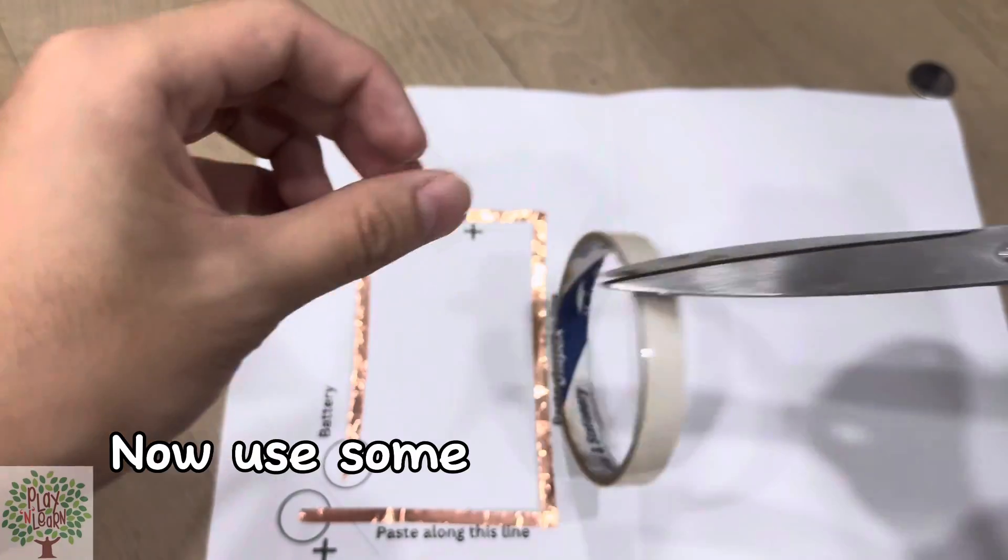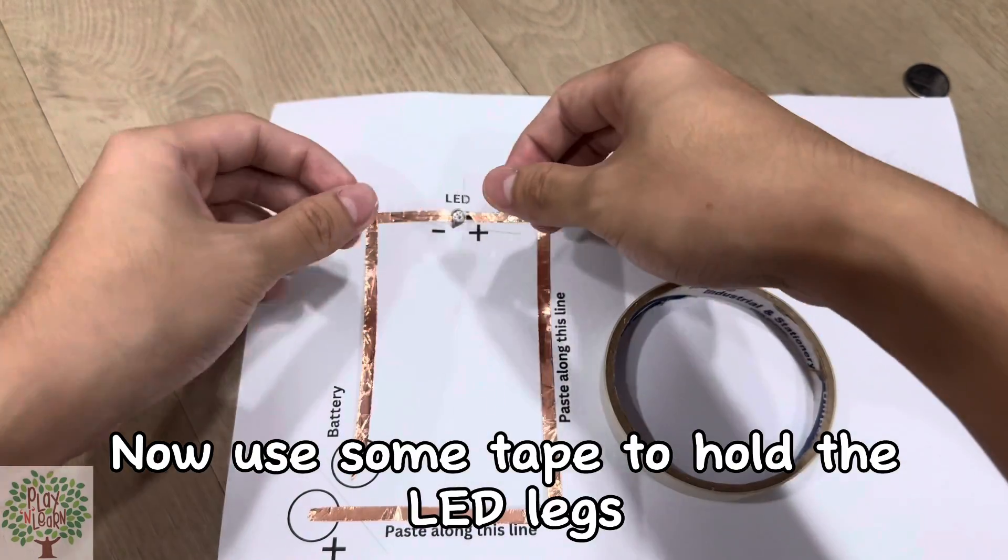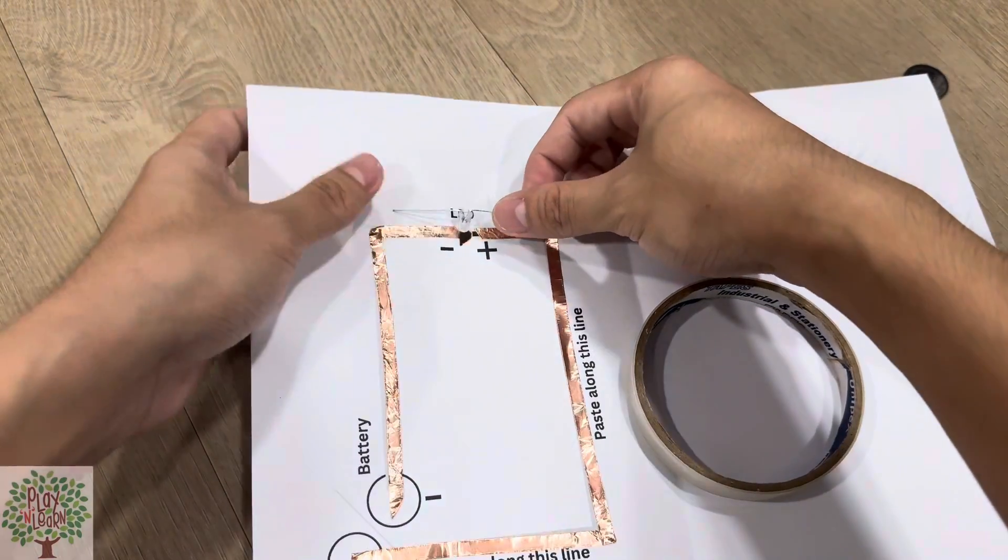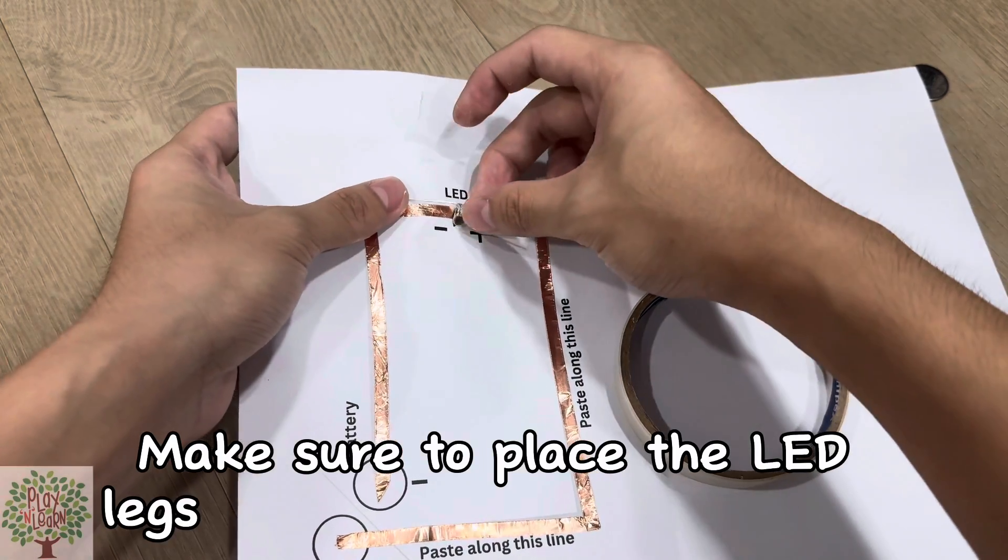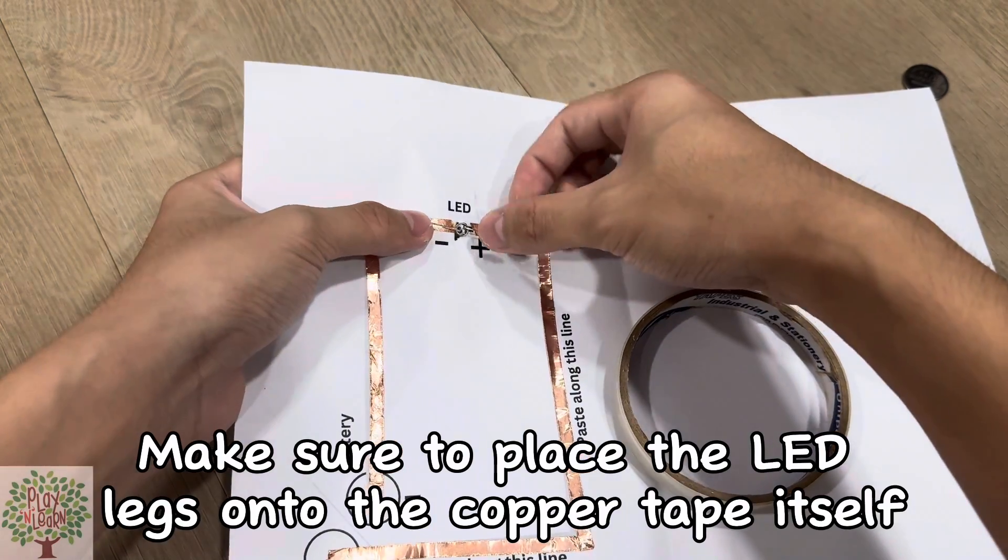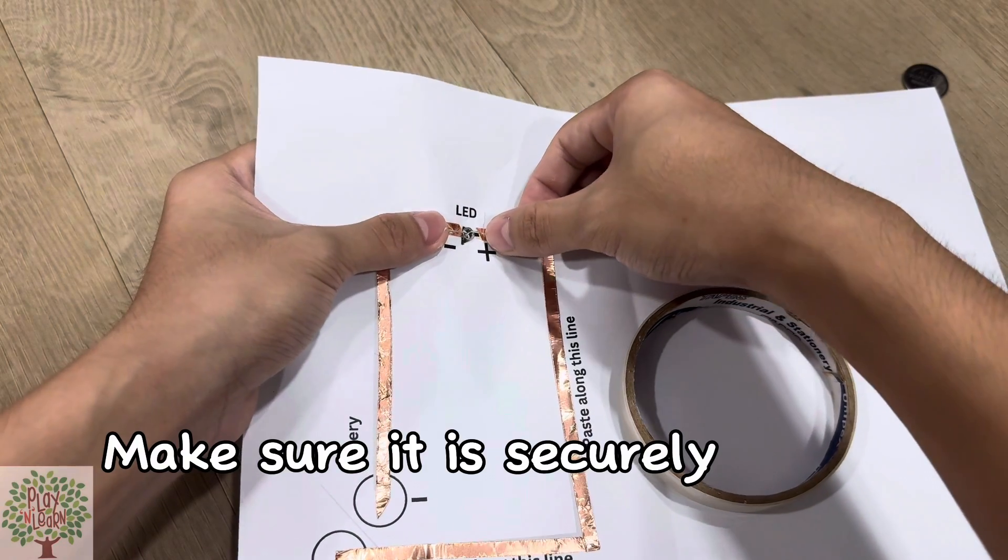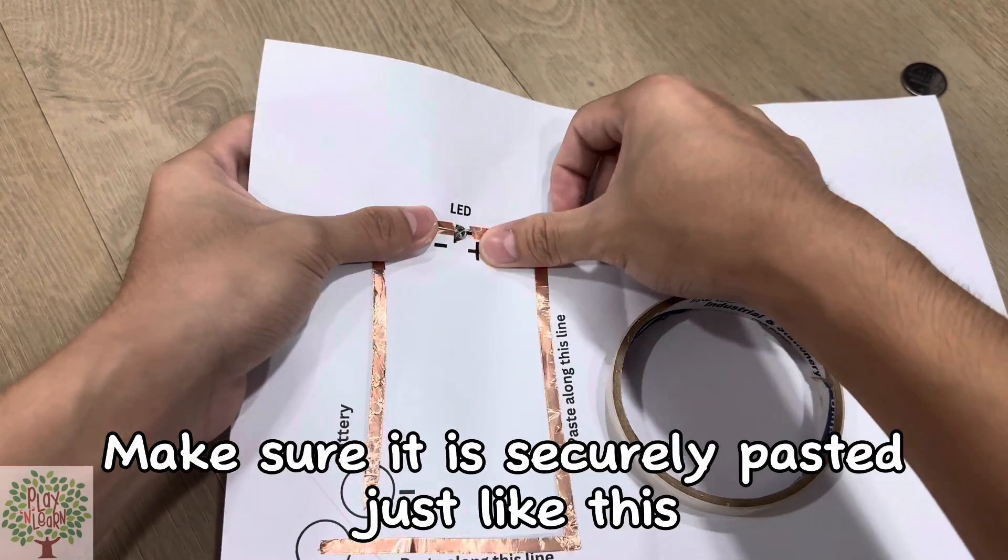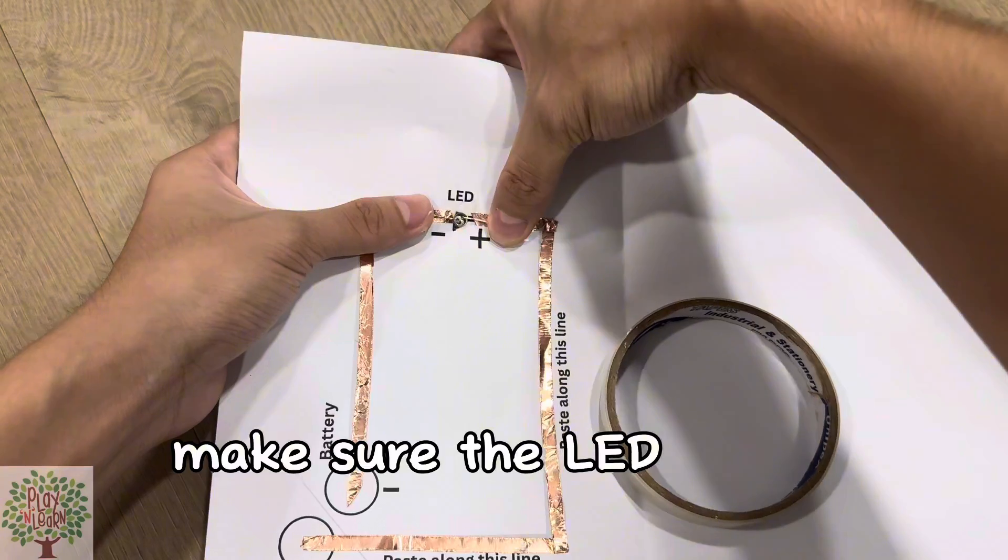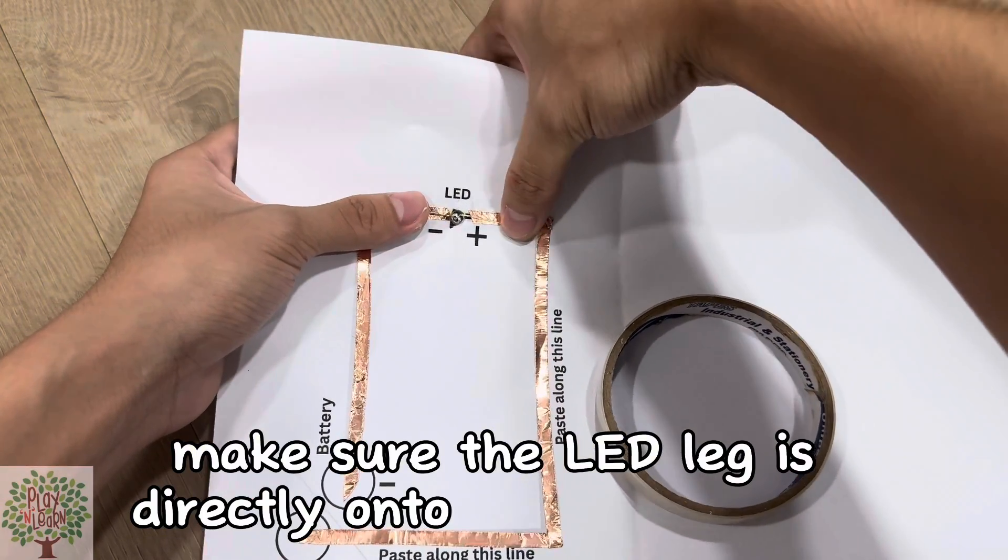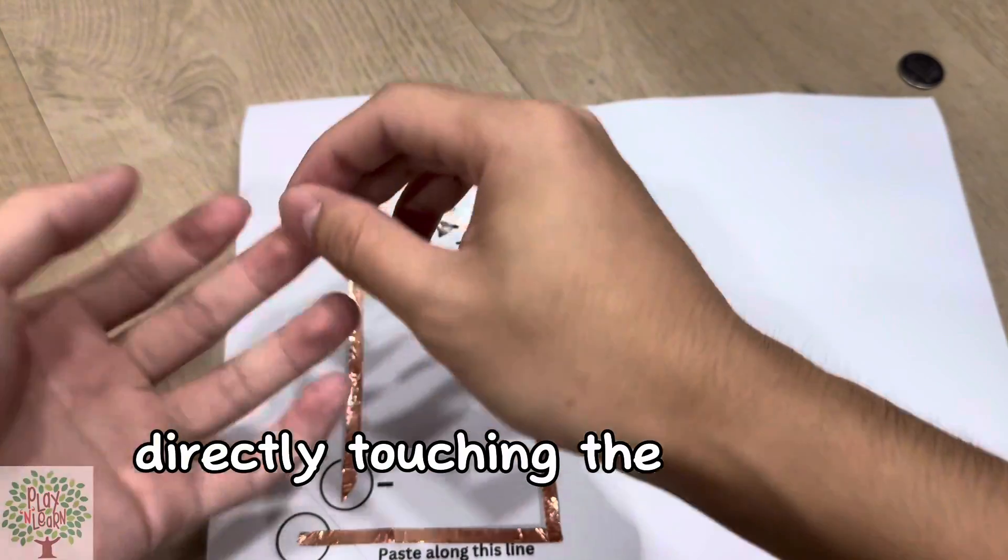Now use some tape to hold the LED legs. Make sure to paste the LED legs onto the copper tape itself. Make sure the LED leg is directly touching the copper tape.